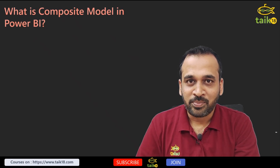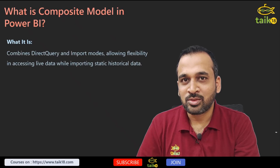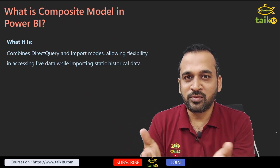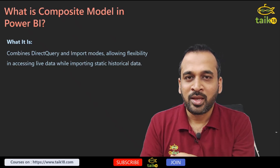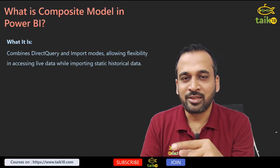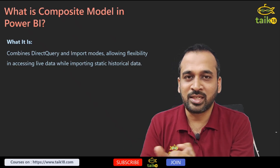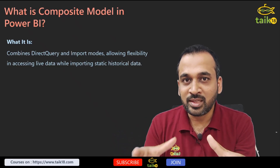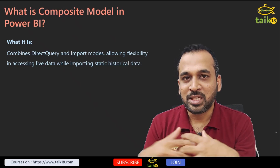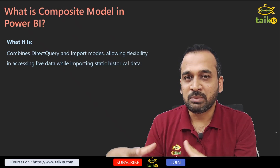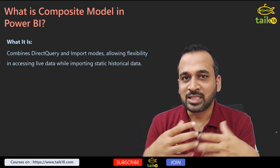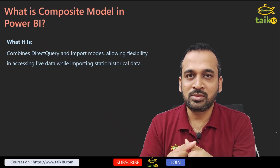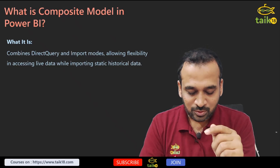The next question is: what is a composite model in Power BI? A composite model is the combination of direct query tables and import mode tables. Usually we used to have two different modes, and after Fabric there are multiple storage modes — direct query, import mode, and direct lake as well. But focusing on the two primary modes: if you have two different kinds of tables from two different sources — for example, a direct query table coming from SQL Server and an Excel file imported into Power BI — and you make a relationship between these two tables, then it's called a composite model.